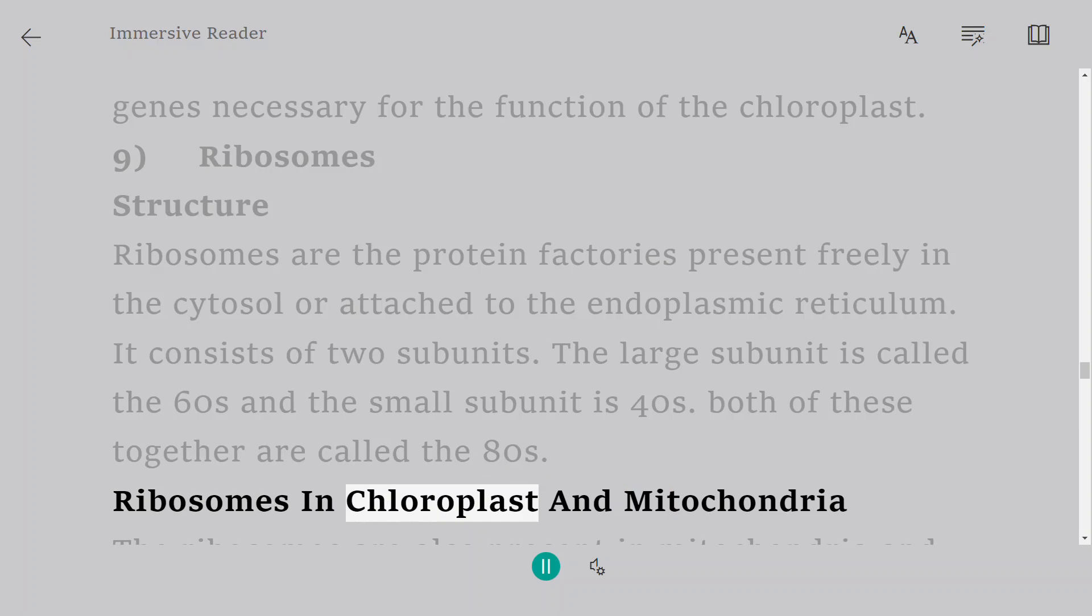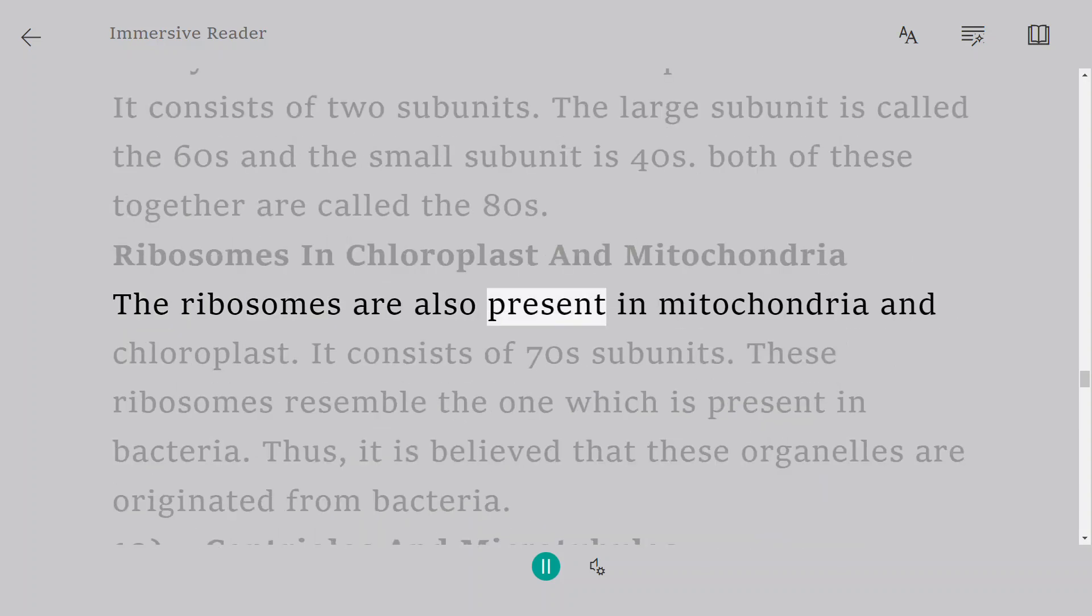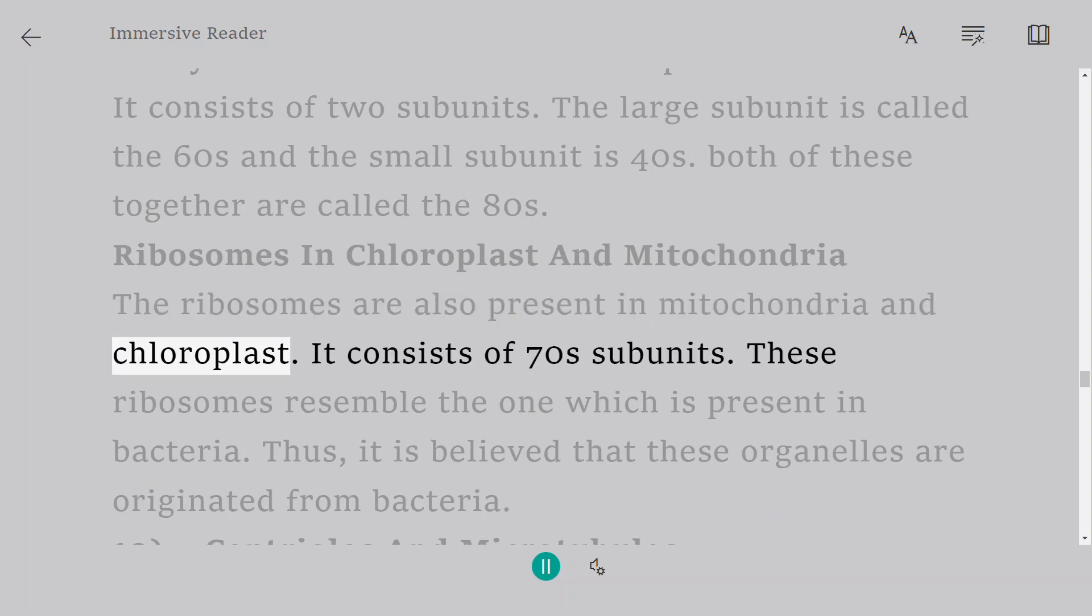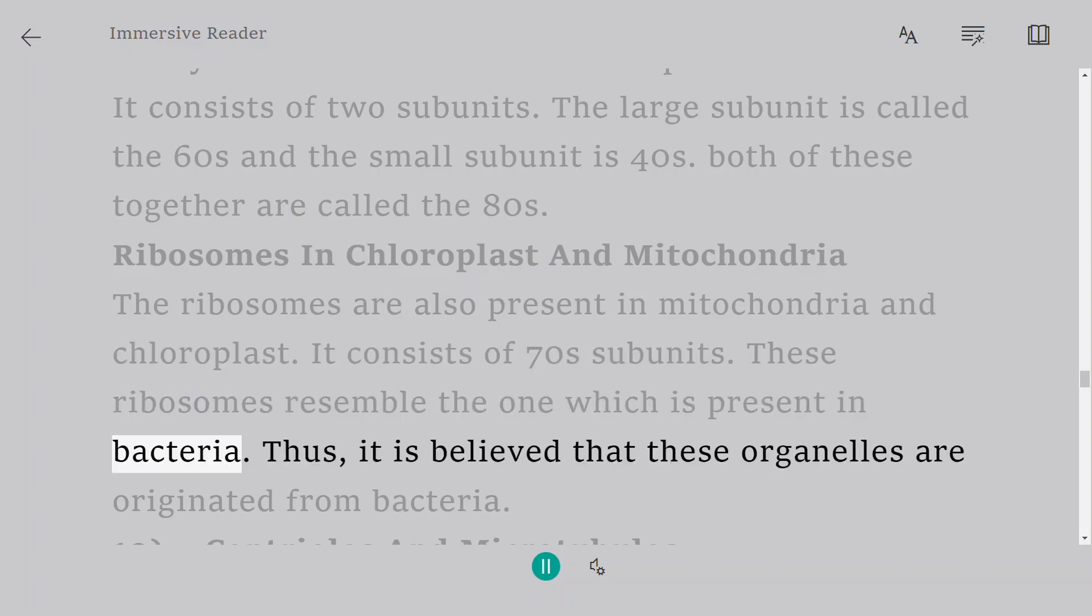Ribosomes in Chloroplast and Mitochondria. The ribosomes are also present in mitochondria and chloroplast. It consists of 70s subunits. These ribosomes resemble the one which is present in bacteria. Thus, it is believed that these organelles are originated from bacteria.